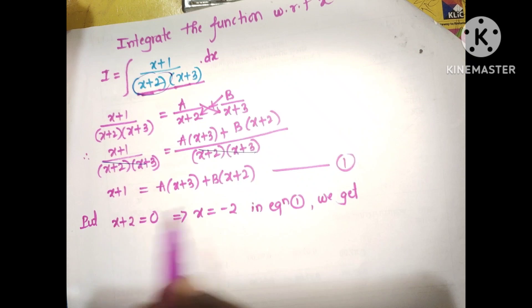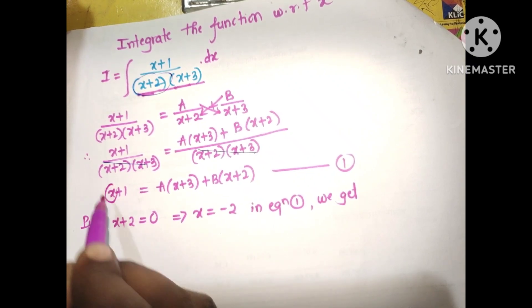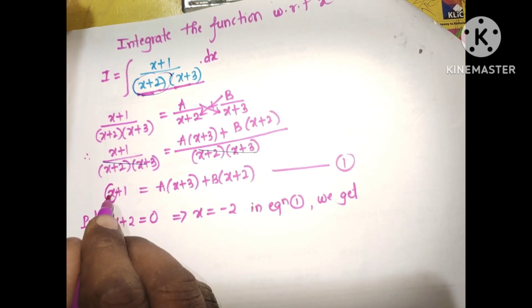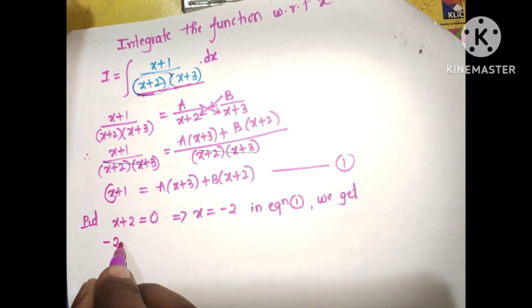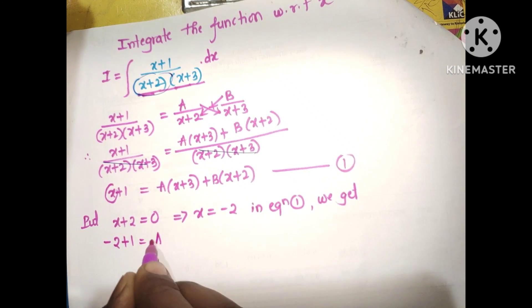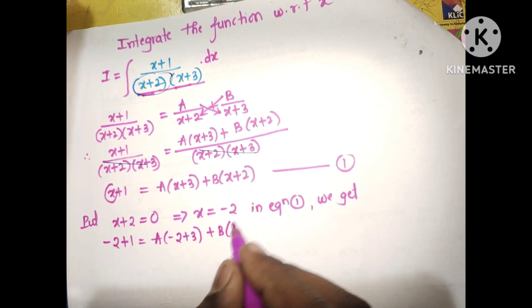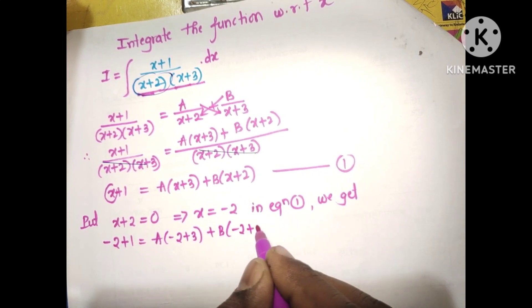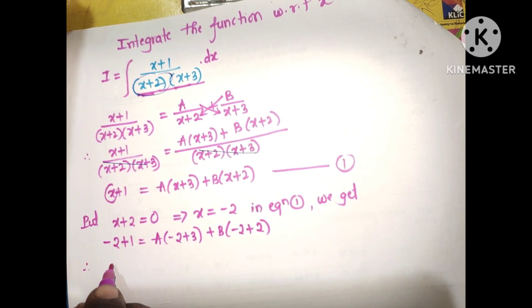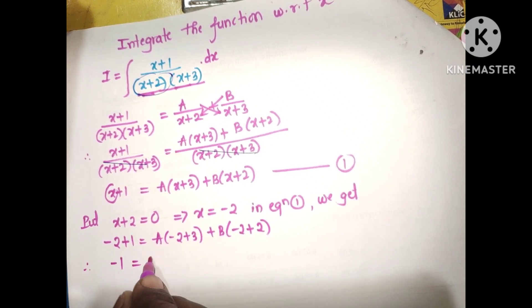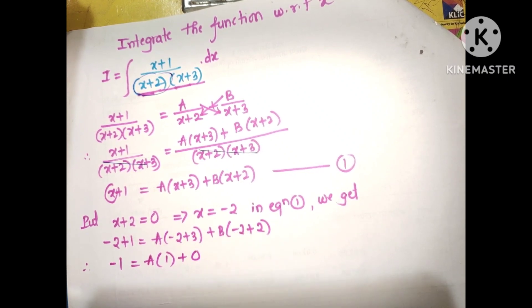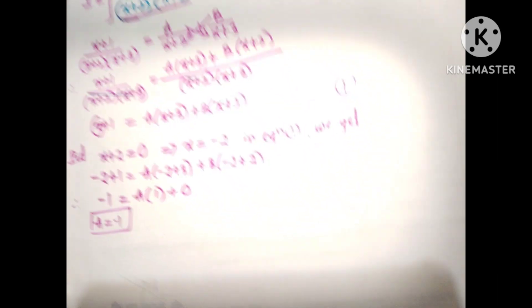Substituting x equals minus 2 into equation number 1: minus 2 plus 1 equals A of minus 2 plus 3 plus B of minus 2 plus 2. So minus 1 equals A of 1 plus B of 0. Therefore A equals minus 1.